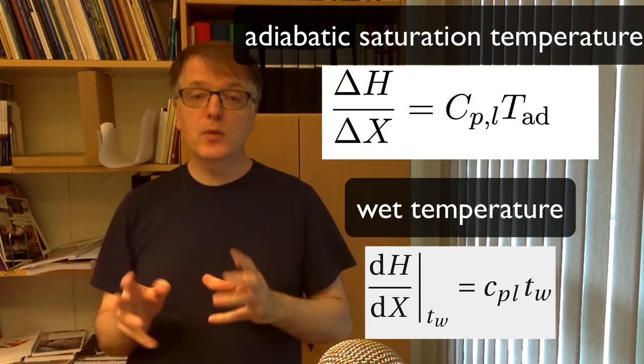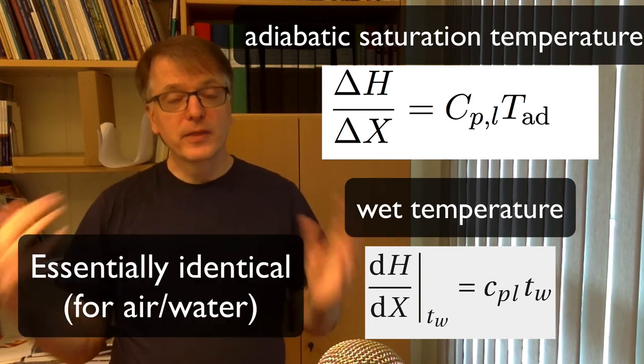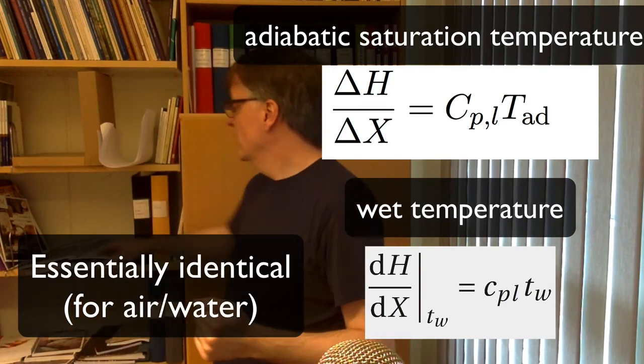So for the air water system due to the simplifications you can make, these lines are essentially identical. They are so identical that we give you only graphs with one of the lines drawn. So in the diagrams we have drawn like this, there is only one line and that's the wet temperature line.